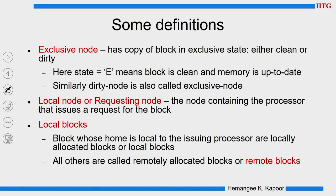Exclusive node is the node which has a copy of the block in an exclusive state. Here exclusive has an additional meaning — it is either clean or dirty. In the protocol when we had the E state, it meant we had the clean data block and memory was up to date. But if a node is housing a dirty block, we can still call it exclusive because it has an exclusive copy — that is the single copy of the block in the system. That is the concept of exclusive node.